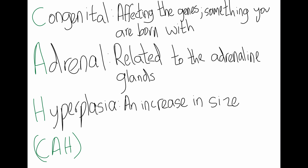The C in CAH refers to 'congenital' — this means it affects the genes and it's something that you are born with. The A in CAH stands for 'adrenal,' meaning it's related to the adrenal glands. And finally, the H stands for 'hyperplasia,' which refers to an increase in size.